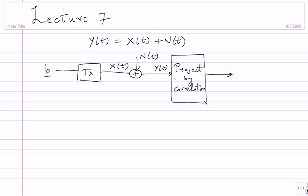Once you do this, you get a vector y, and this vector completely holds all the information you possibly want about b. If you only worry about b, everything is held by this vector y — you do not need any other information. When you do correlation, x(t) and n(t) both go through it. By saying y is enough, I mean it is enough to look at the component of n(t) in your space; any component orthogonal to it can be completely ignored, because given y, everything else is independent of x(t).